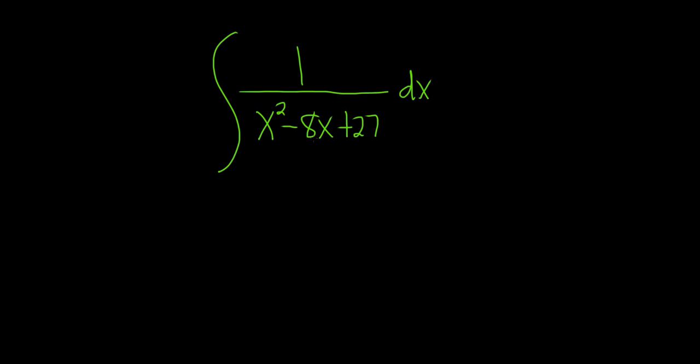So since it doesn't factor, you have to try something else. If it did factor, you would use something called the method of partial fractions, which is typically learned later in a calculus course. So since it doesn't factor, what we do is we complete the square. Let's go ahead and do that.